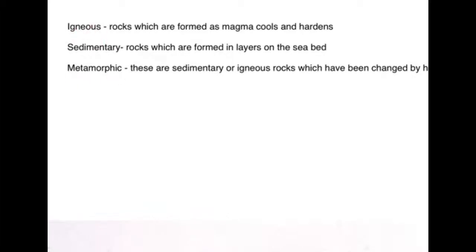Igneous rocks are rocks which are formed as magma cools and hardens. The two examples of igneous rocks are basalt and granite.